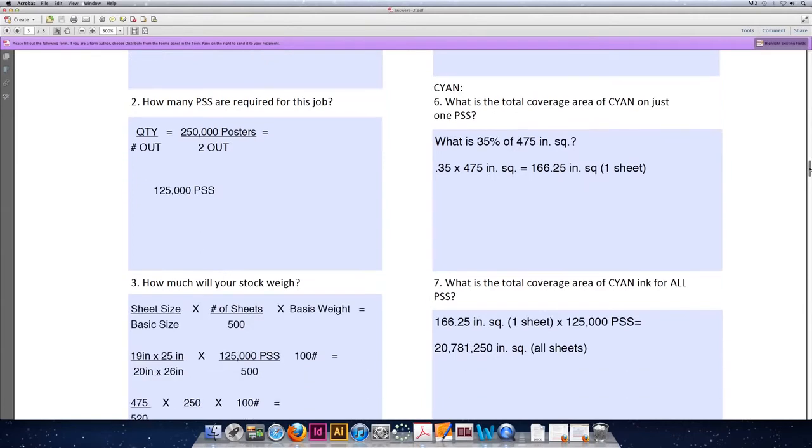Once we know that we can fit two out on a sheet of paper, question two asks how many press size sheets are required for the job. The formula for calculating the total number of press size sheets is the quantity you're trying to print, and that for our problem is 250,000 posters, divided by the number out, and we've already determined that to be two. So 250,000 posters divided by two out, or two posters per sheet of paper, comes out to 125,000 press size sheets being required to print the job.